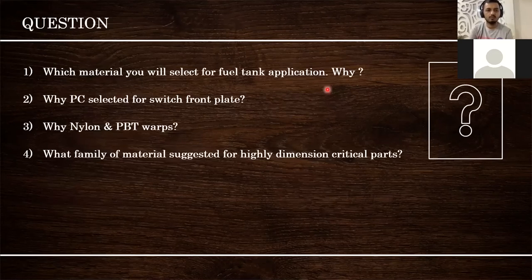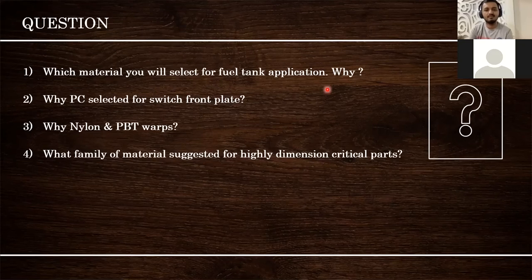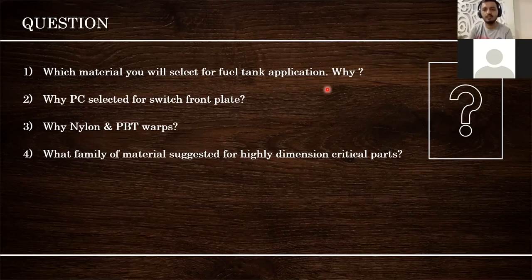Question time: which material is used for a fuel tank — for a two-wheeler fuel tank or an automotive inner liner — amorphous or semi-crystalline, and why? The answer: semi-crystalline, because it will not react with petrol. It has good chemical property and will not show a reaction with the fuel.